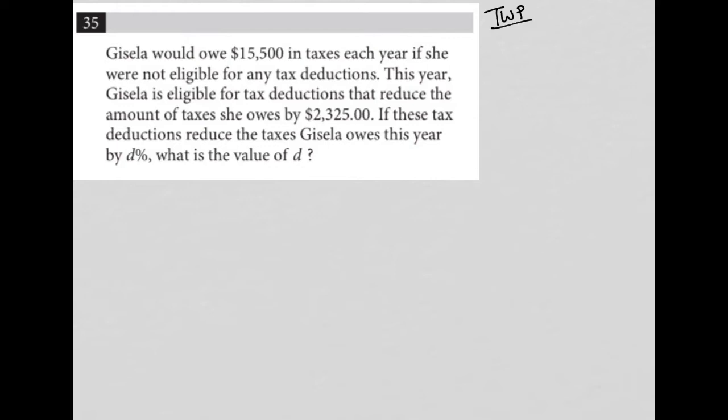Instead, you want to stop at the end of each sentence, make sure you understood what you read, and also definitely write down any quantitative information. So this question says Gisela would owe $15,500 in taxes each year if she were not eligible for any tax deductions.